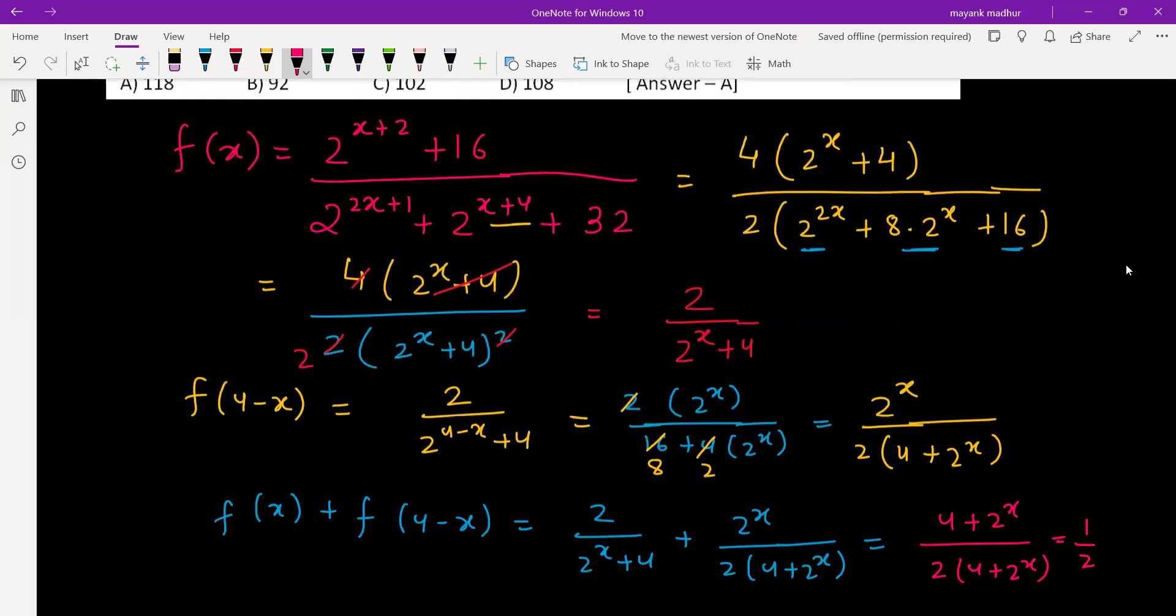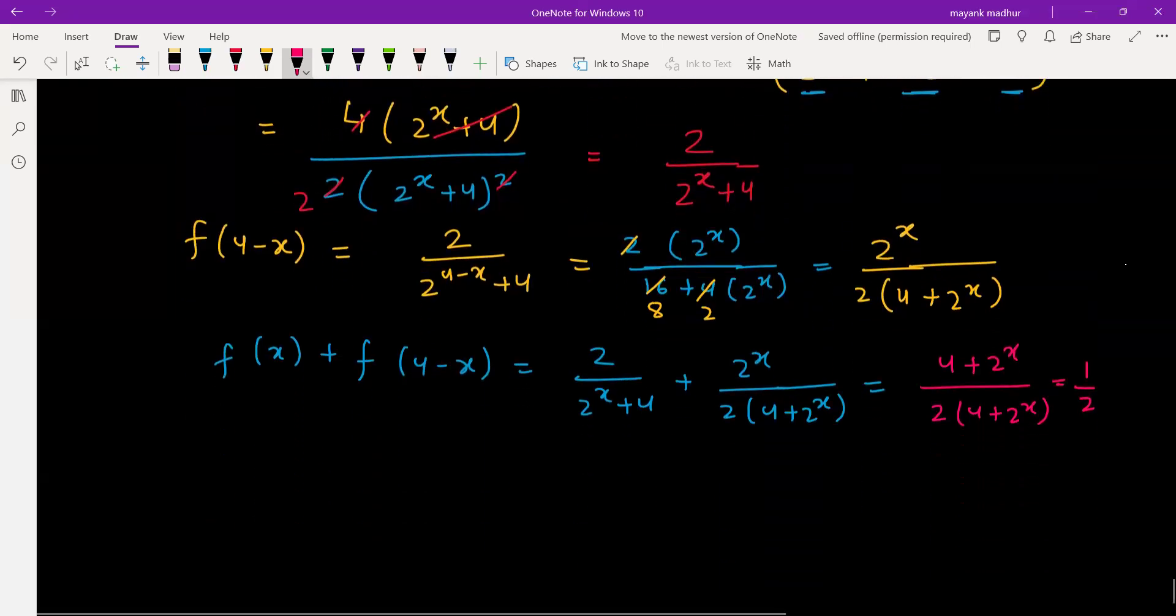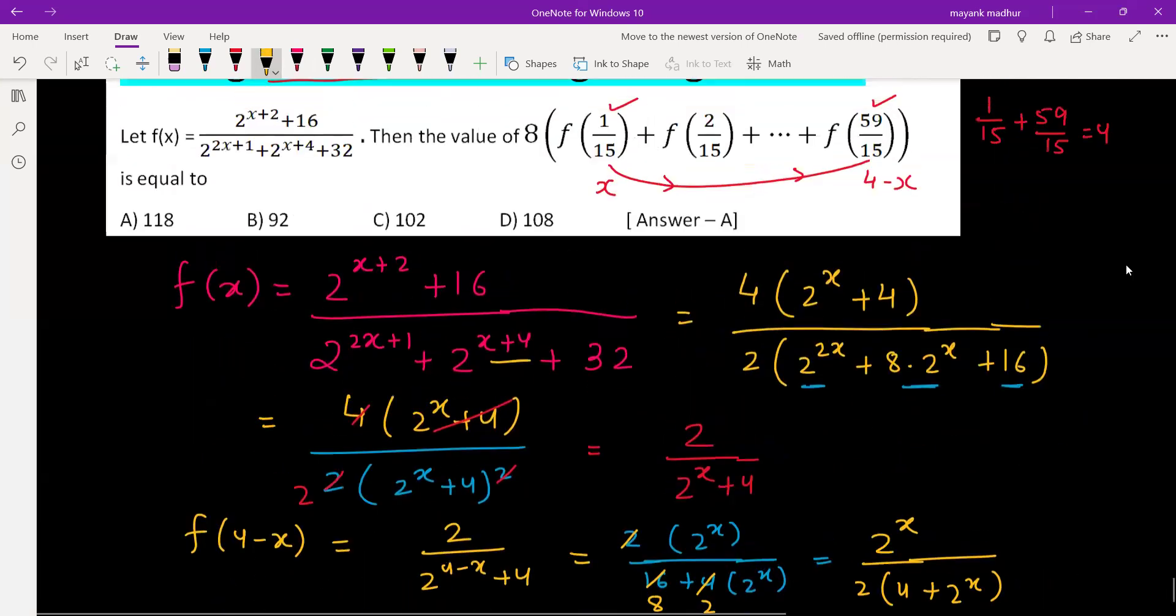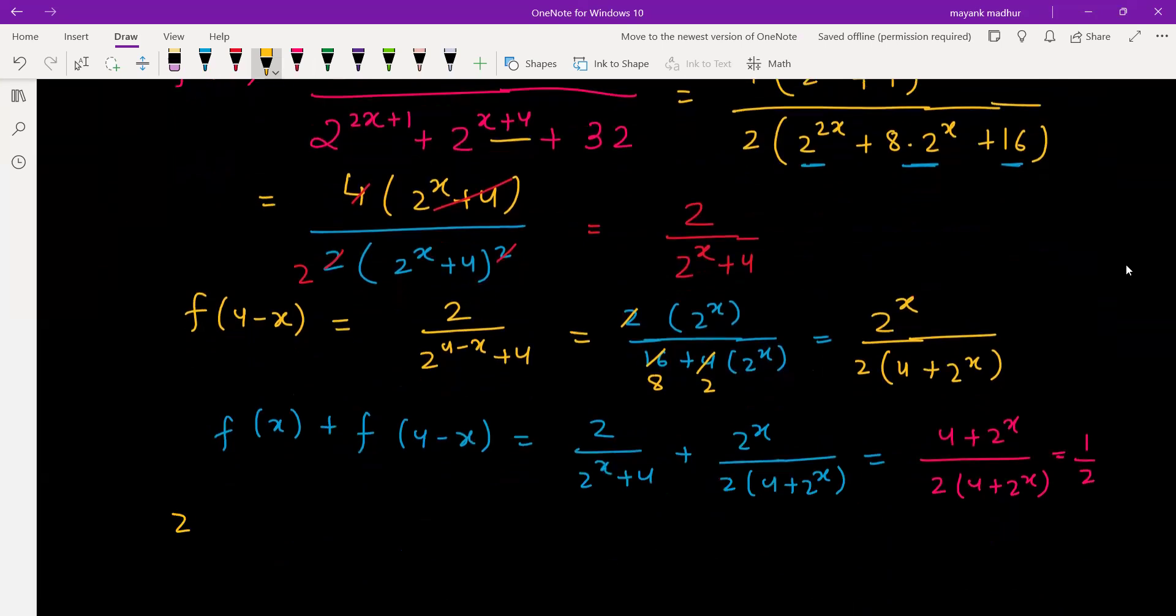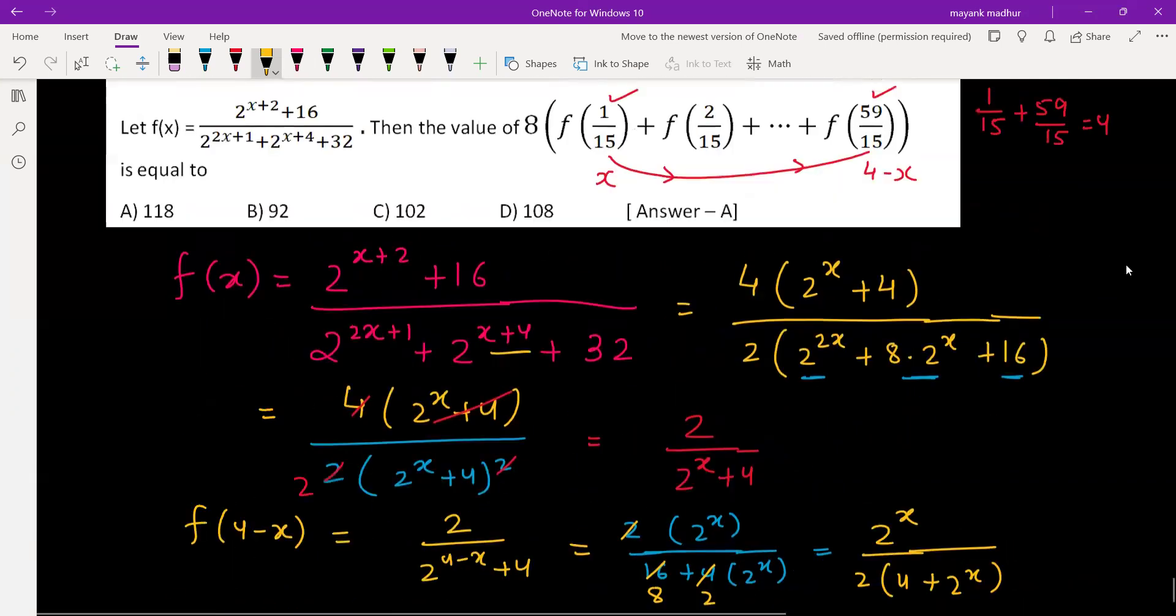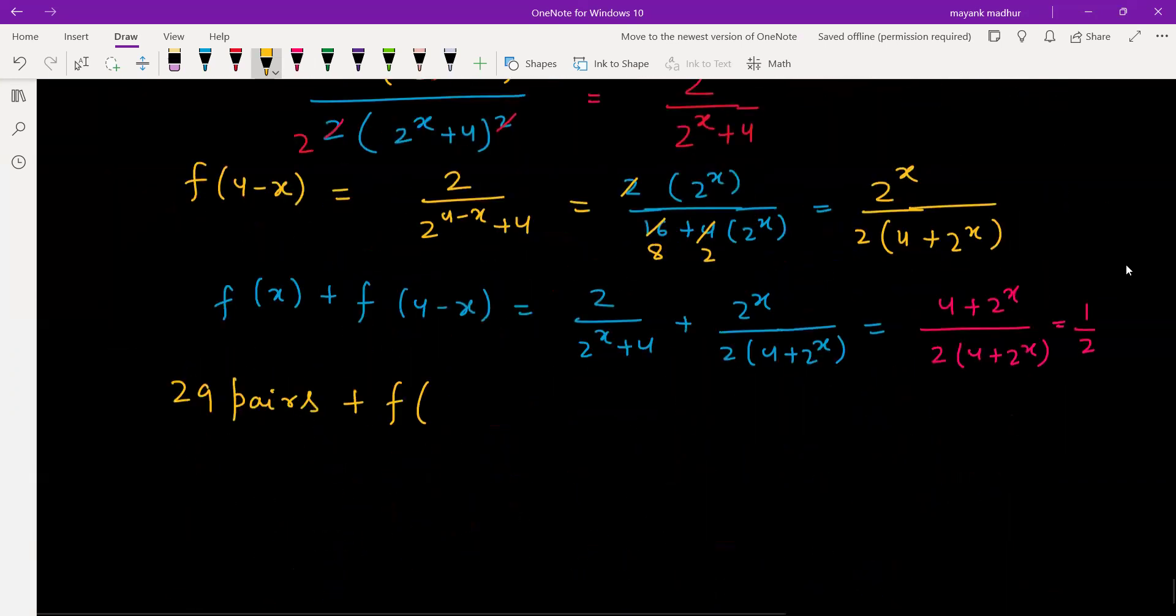So sum of first and last term is half. How many times do we have? We have 1/15 to 59/15. Fifty-nine terms are there, which means 29 pairs are there and one middle term. We are going from 1 to 59, so middle term is 30/15.